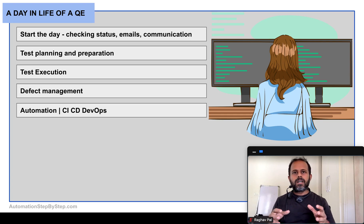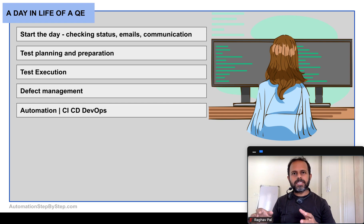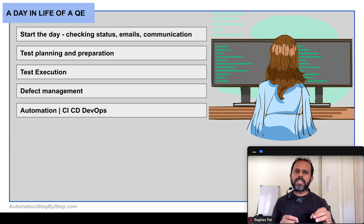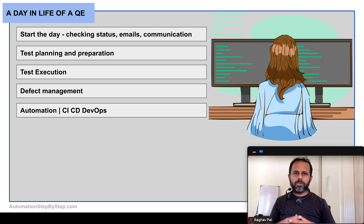Generally, in a QA team there are two parts: one part takes care of automation and the other runs test cases manually. You will mostly be involved with one of the teams. If you are on the automation team, you will spend most of your time on automation, CI/CD, and DevOps activities. If you are on the other team, you will mostly handle manual test executions, defect management, and related activities.